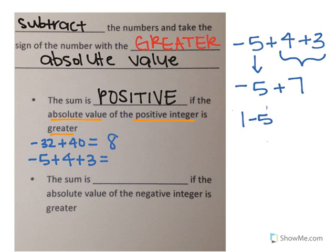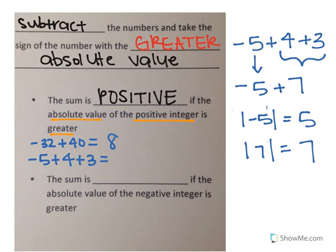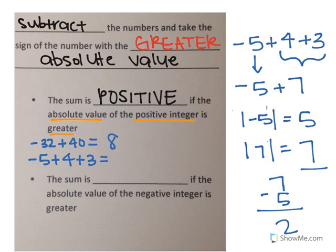So I have negative 5 plus positive 7. I'm going to find the absolute value of negative 5, which is 5, and the absolute value of 7 is 7. The number with the larger absolute value is positive 7, since 7 is greater than 5, so my answer is going to be positive. Remember, we subtract the numbers: 7 minus 5 gives me 2. My answer is positive because 7 was the number with the greatest absolute value and it was positive. So negative 5 plus 4 plus 3 equals 2.